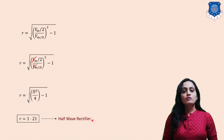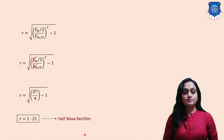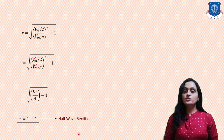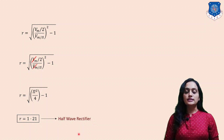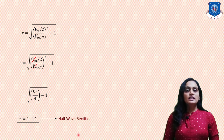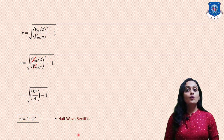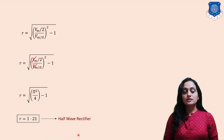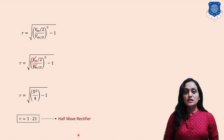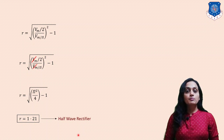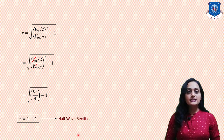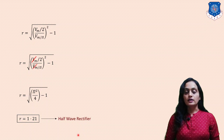The ripple factor for the half wave rectifier is 1.21. Representing it as a percentage by multiplying by 100, we get 121.21%, meaning that 121% of ripples are present in the half wave rectifier output.